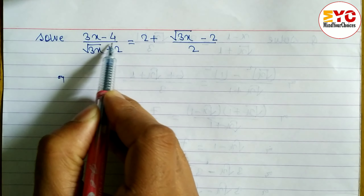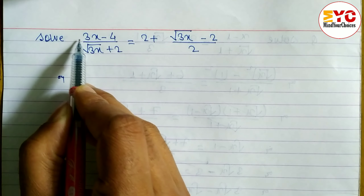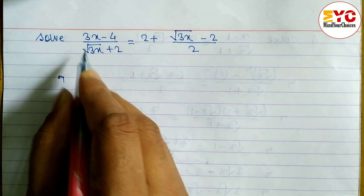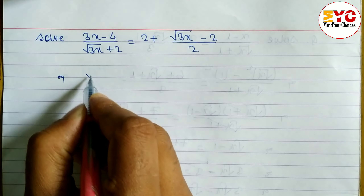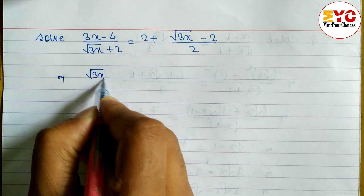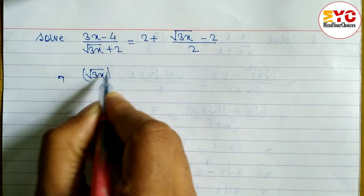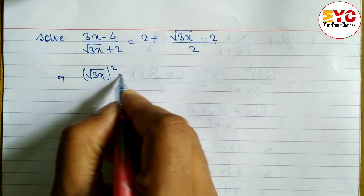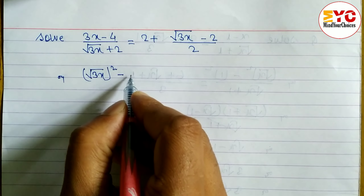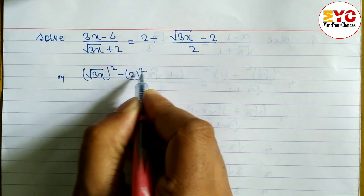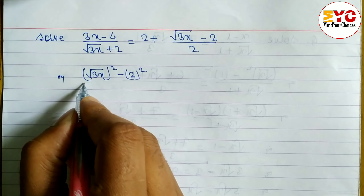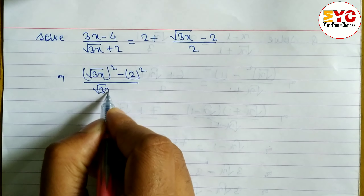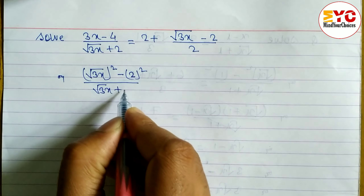First, we have to convert the numerator in the form of a² minus b². So in the place of √(3x), we can write (√(3x))², and square and root cancel, giving us 3x. In the place of 4, we can write 2², since 2² equals 4. In the denominator, we write the same: √(3x) plus 2.